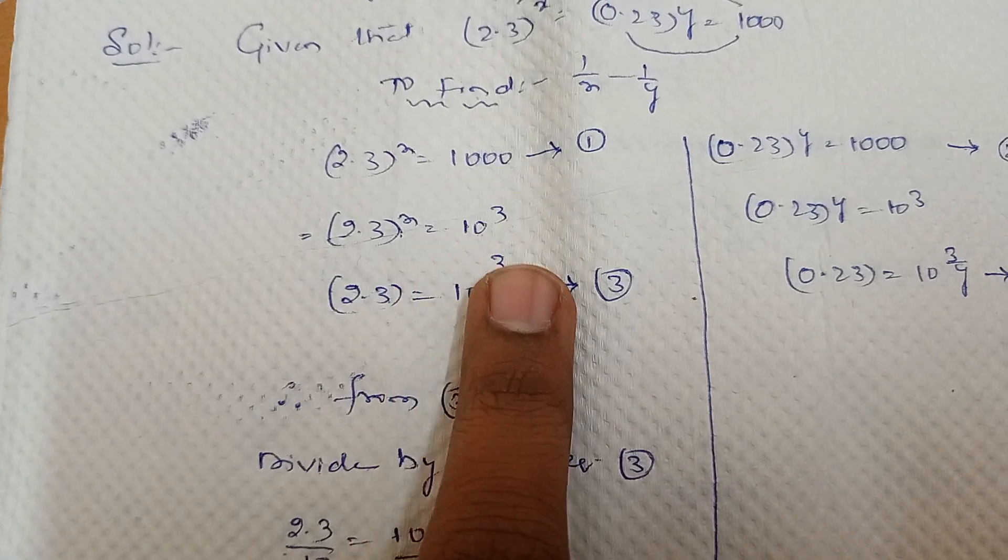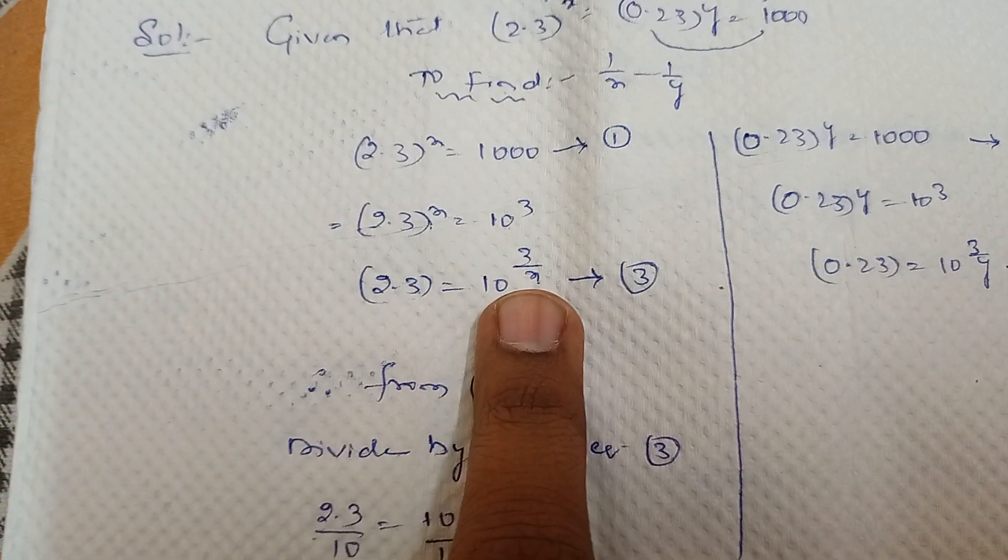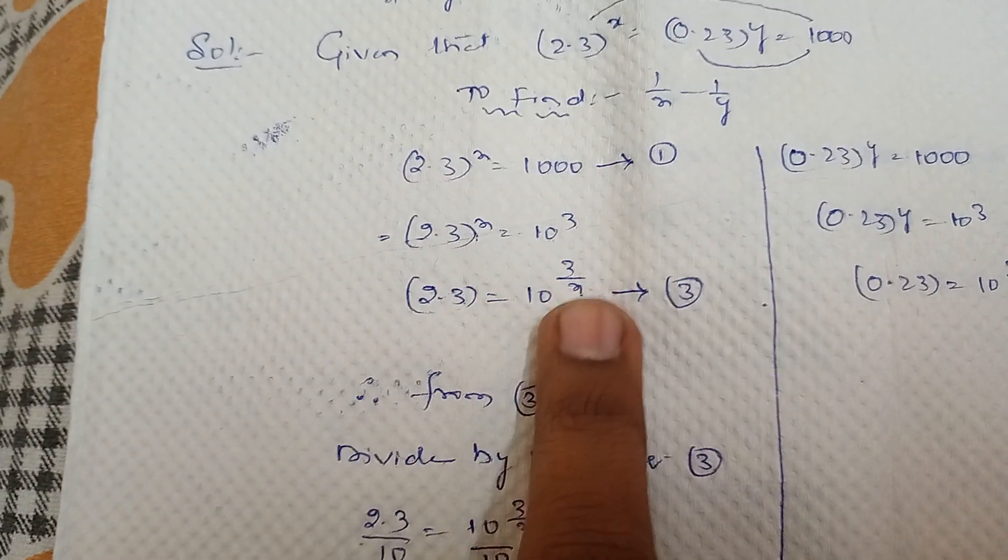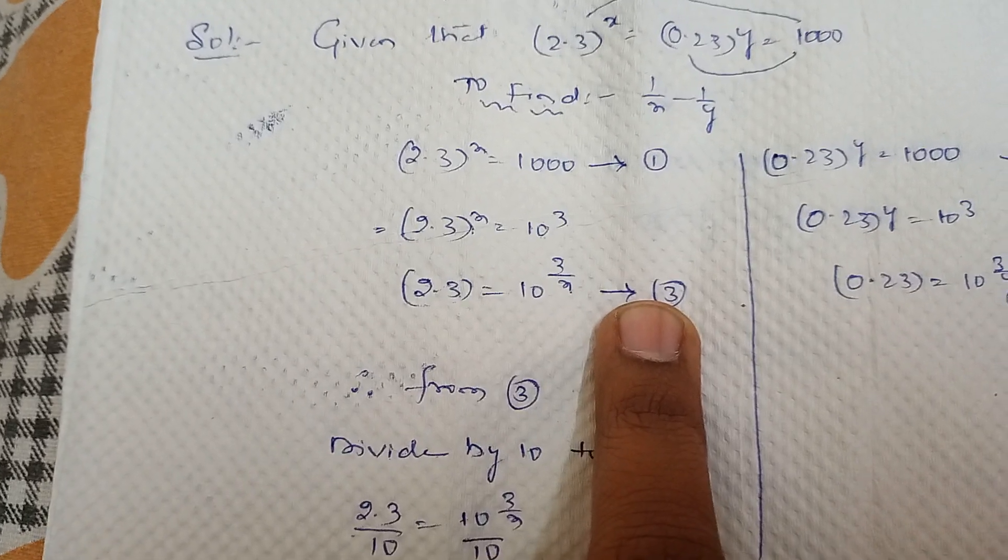So this x goes to RHS. If you send x to RHS, it becomes 1 by x. This is x by 1. If you send to RHS, it becomes 1 by x. So 2.3 equal to 10 power 3 by x. Give it as equation 3.